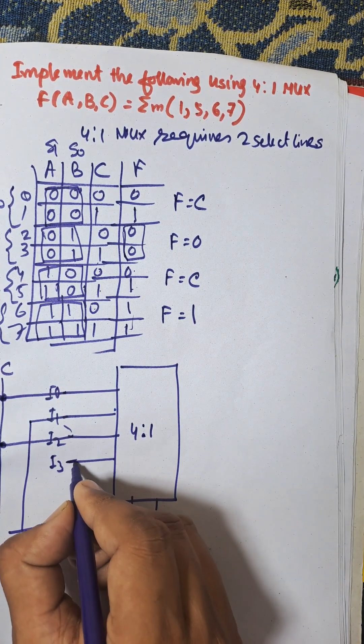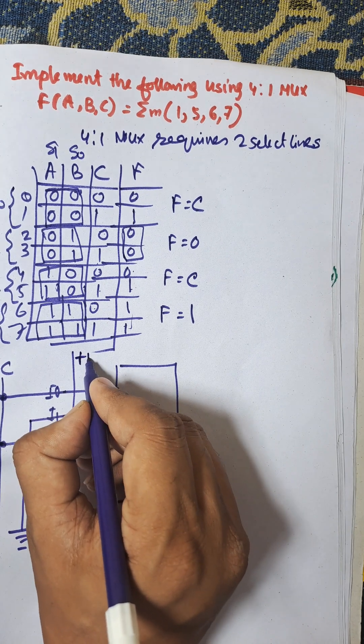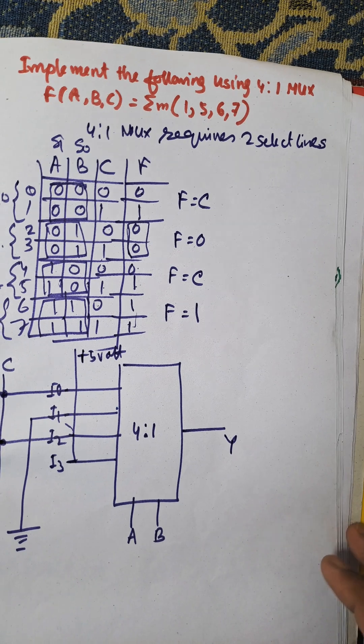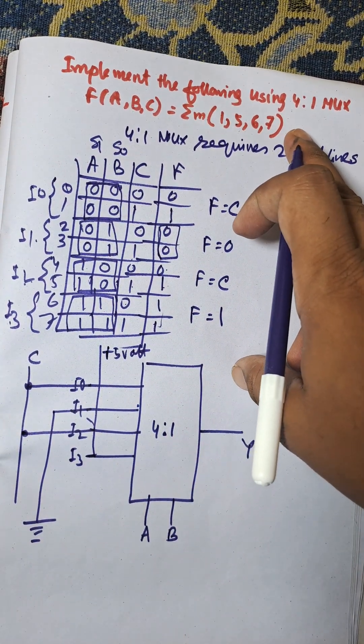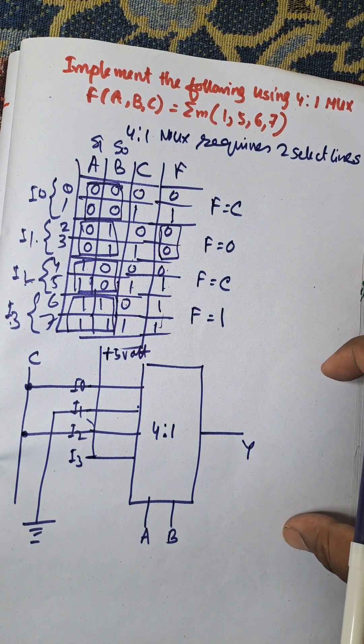I1 is considered 0,0, meaning it is grounding. And F equal to 1, that is I3 equal to 1. This is +5 volts. And this is output of the MUX. So this is the implementation of the given function using 4-to-1 MUX. Thank you very much for watching this video. Share and subscribe. Thank you.